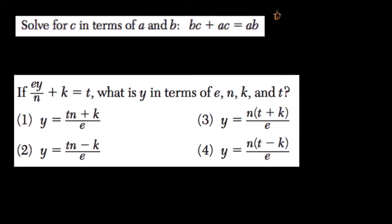So notice we have BC, right? Oops, I'll fix this. BC plus AC equals AB.